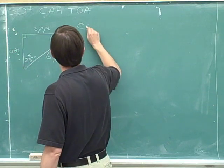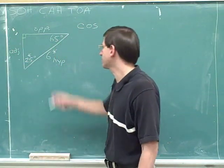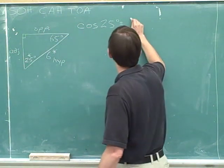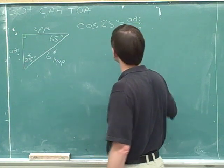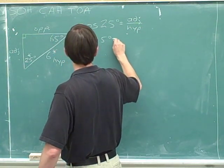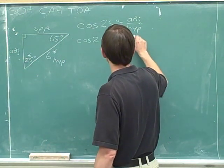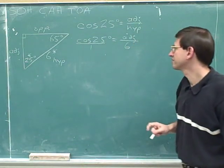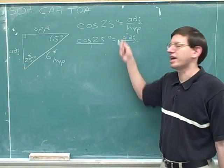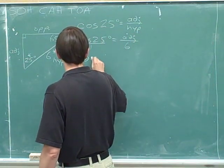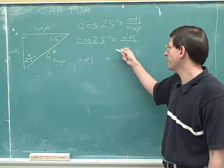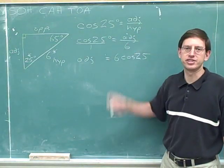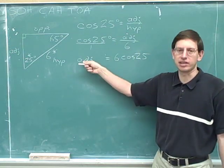Instead, let's start by using the cosine — we're going to focus on the cosine of 25. We could do the cosine of 65, but we've decided to focus on 25. Cosine is adjacent over hypotenuse. The adjacent side we don't know, so I keep writing that out, but we know what the hypotenuse is — that's 6. Now we can cross-multiply: we have 1 times the adjacent side on one side, and 6 times the cosine of 25 on the other.